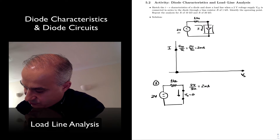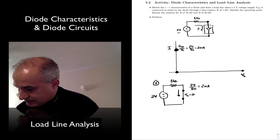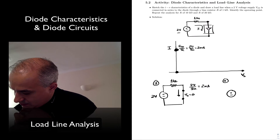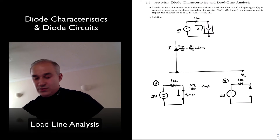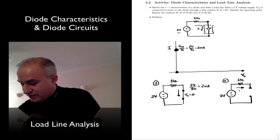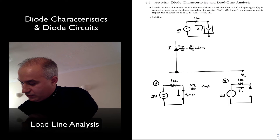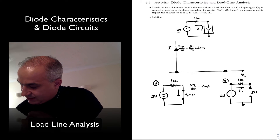That's the maximum current that can flow through the circuit. Now we can also look at what is the maximum voltage that we can have across the diode. That's going to happen if the diode is open. In that case we'll have no current flowing, so the current will be zero — this point right here. With no current drop across the resistor, we have 2 volts. If we assume this is ground, it will be 2 volts. So I'm going to plot that right here — 2 volts.